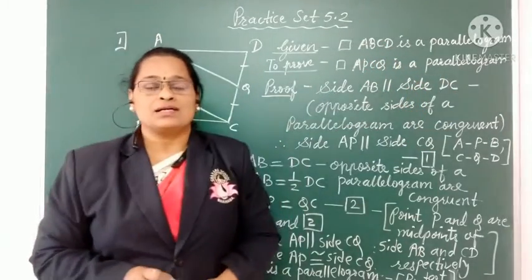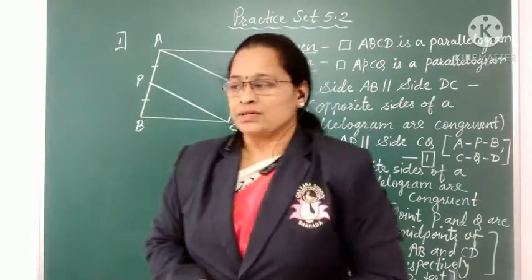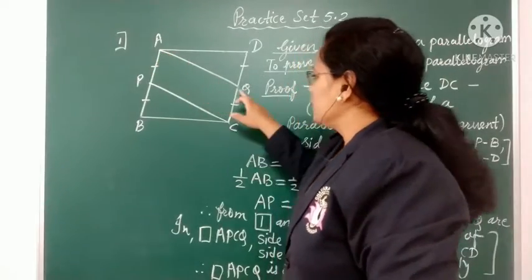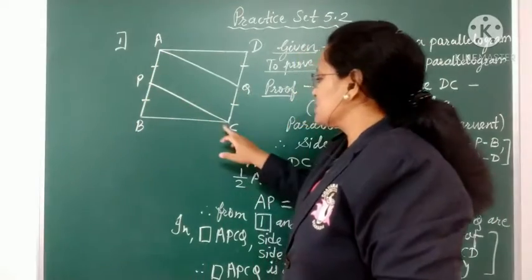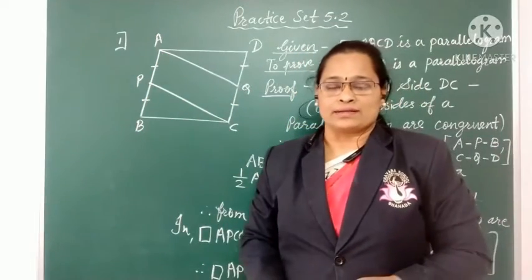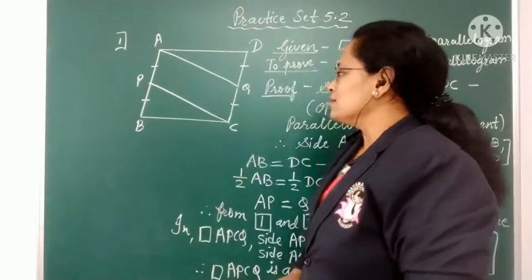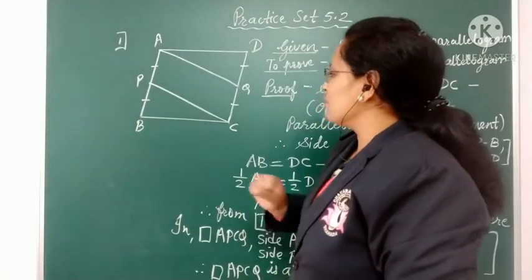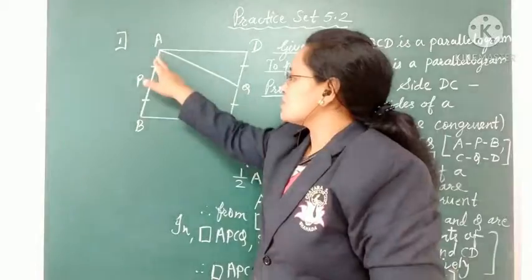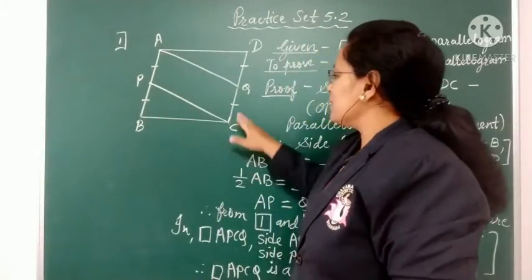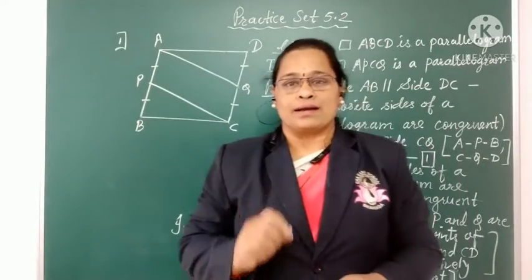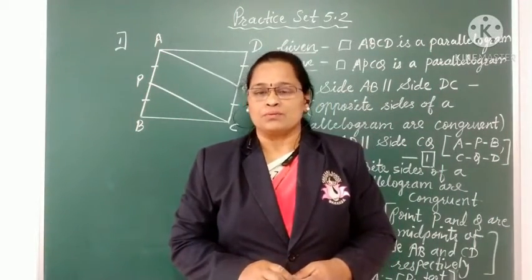Now what is asked to prove here? If you join AQ and PC, you will get one more quadrilateral. That quadrilateral is named APCQ. So we have to prove that this quadrilateral APCQ is also a parallelogram.